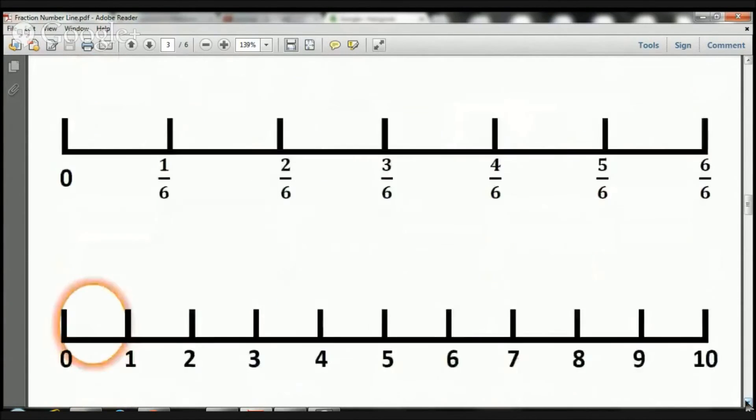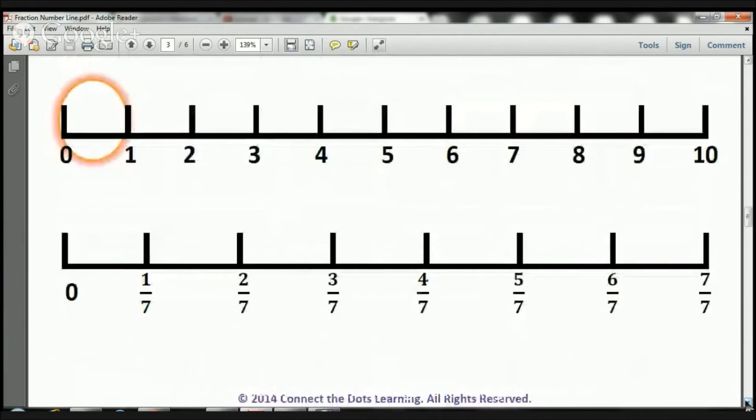Let's go ahead and let's move on to the next one. Now we're going to go over 7ths. Again, we're looking at 0 to 1 and we're magnifying it. We just magnified it. We made it bigger so we could take a look at it.